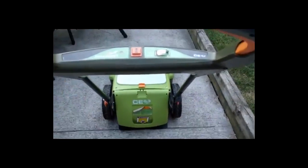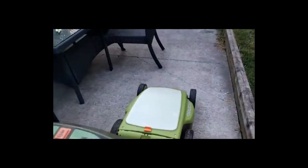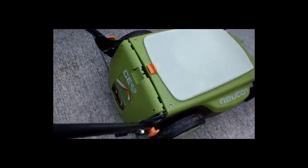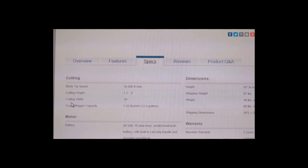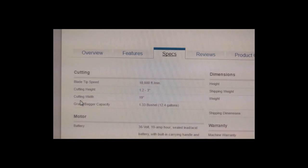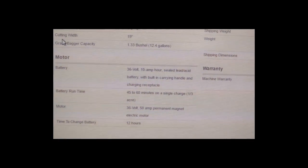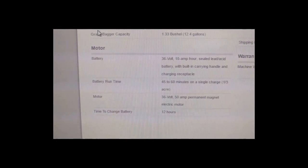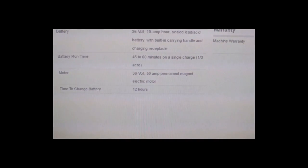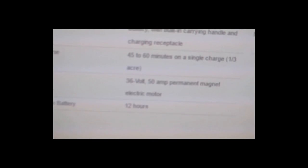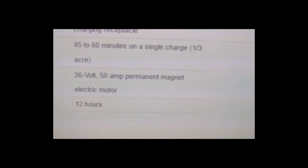In this project we're going to make a lithium-ion battery pack for this thing. I'm on the Newton lawnmower website looking at the specs to see what voltage the motor was pulling. It says here motor 36 volt 50 amp permanent magnet electric motor. That 50 amp number kind of scares me.